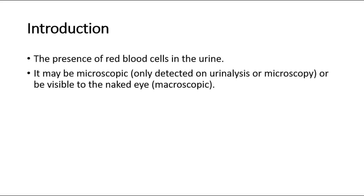Hematuria describes the presence of red blood cells in the urine. It may be microscopic, only detected on urinalysis or microscopy, or be visible to the naked eye, which is macroscopic, where patients complain of having blood in urine.